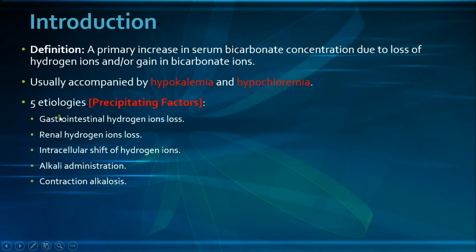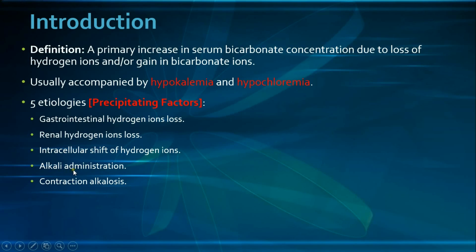There are five main pathophysiologies or etiologies by which metabolic alkalosis occurs, also known as precipitating factors: GI hydrogen ion loss, renal hydrogen ion loss, the intracellular shift of hydrogen ions, alkali administration, and finally contraction alkalosis.